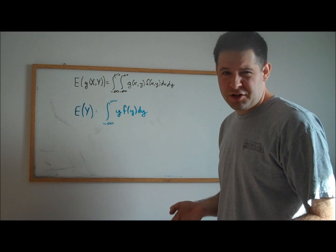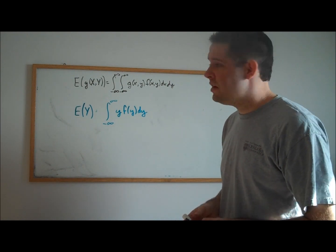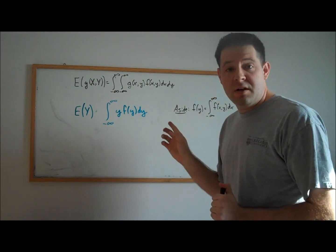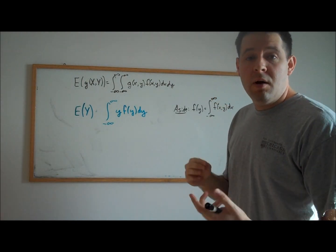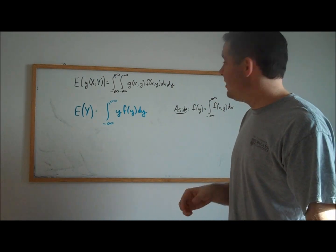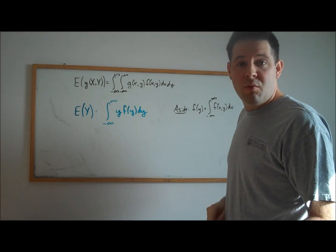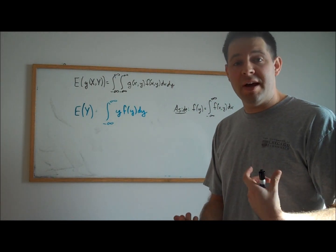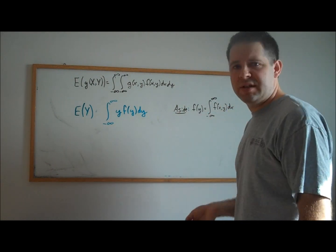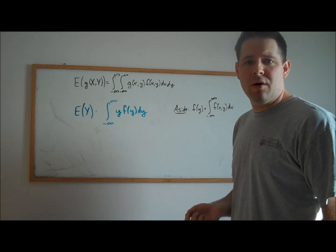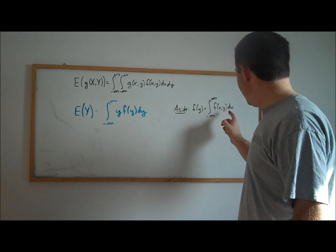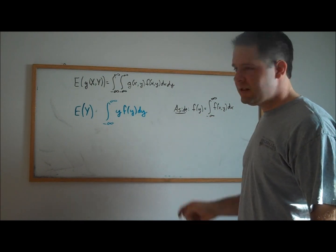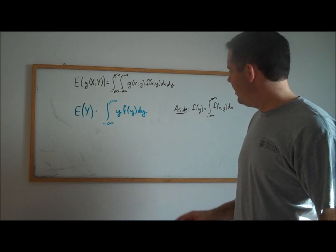Let's get an expression for this density of y. We know from a previous video that if we want to get the density of y from the joint density of x and y, all we need to do is integrate out x from the joint density, and that will give us the density of y.